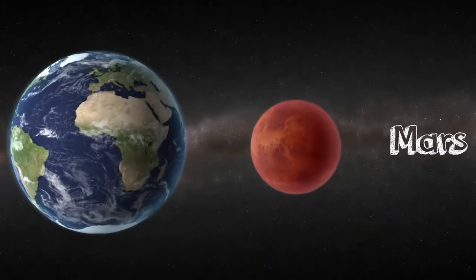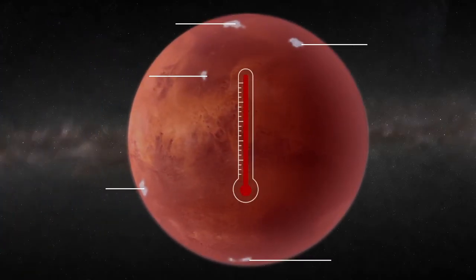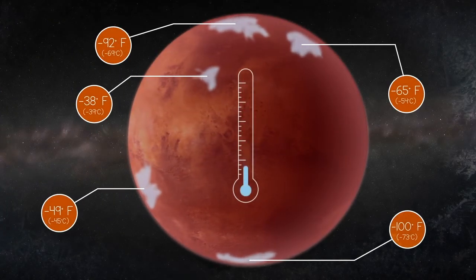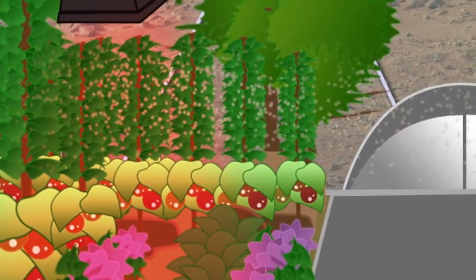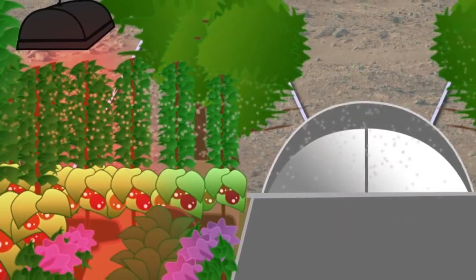The temperature is a lot colder on Mars, with some places significantly colder than anywhere on Earth. There's minimal oxygen in the atmosphere, but a lot of carbon dioxide that can be used to help with plant growth.